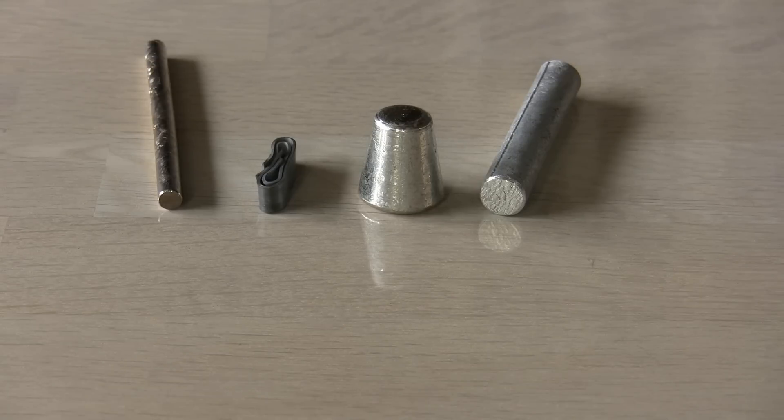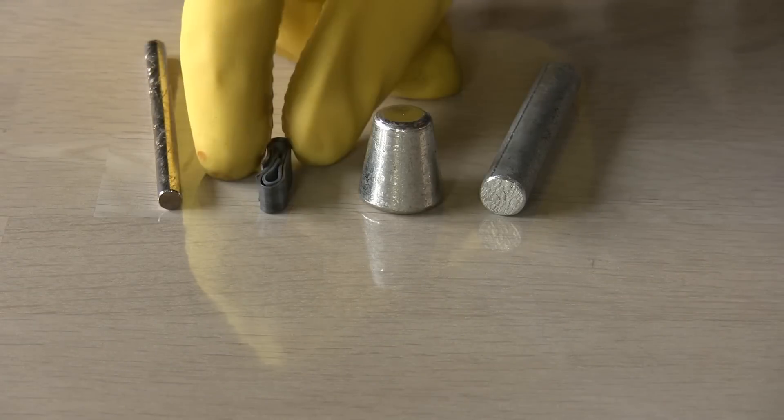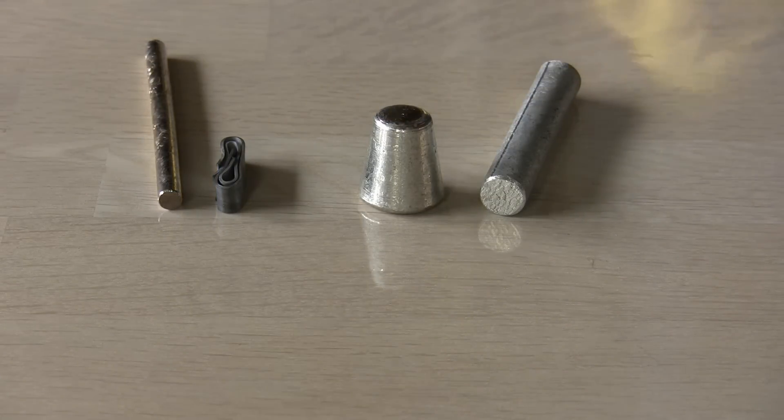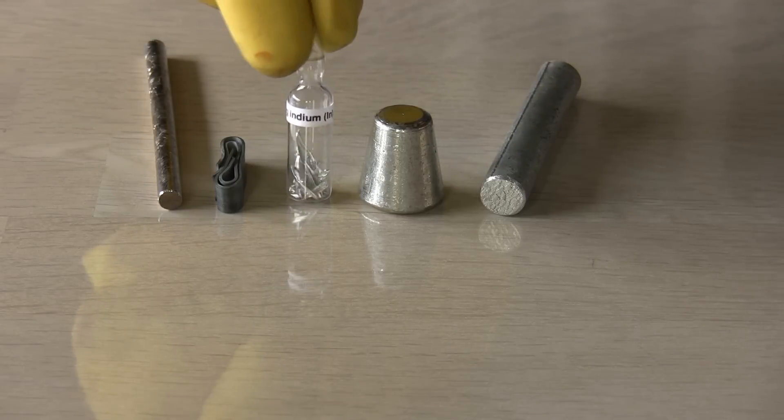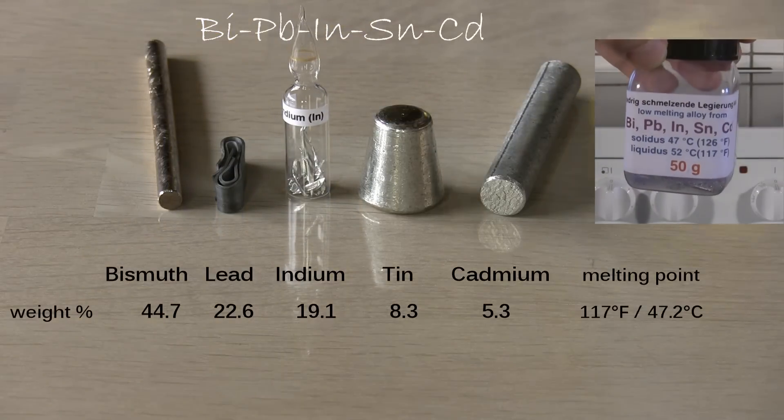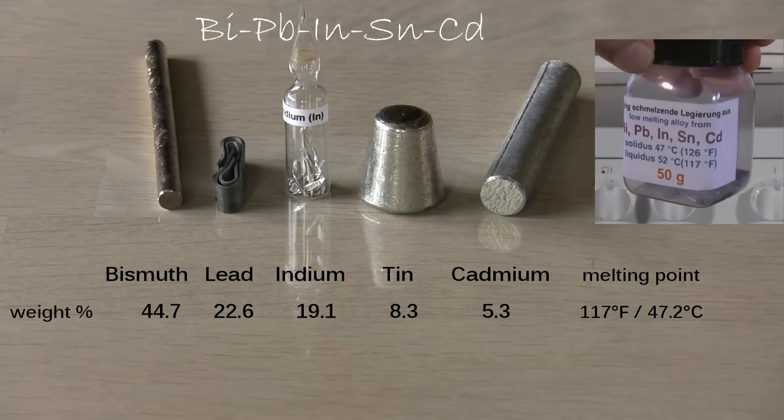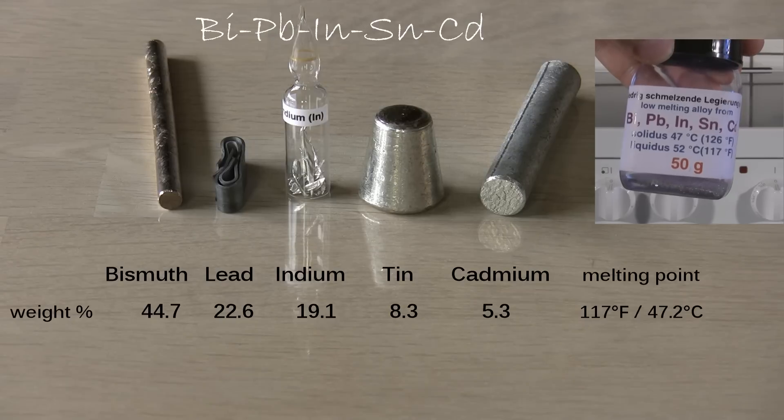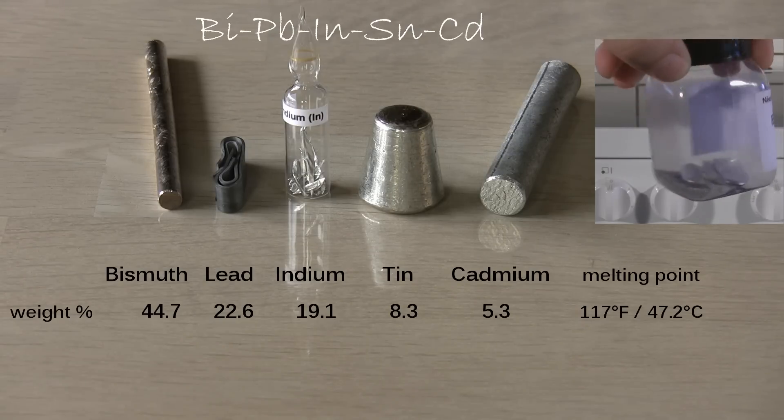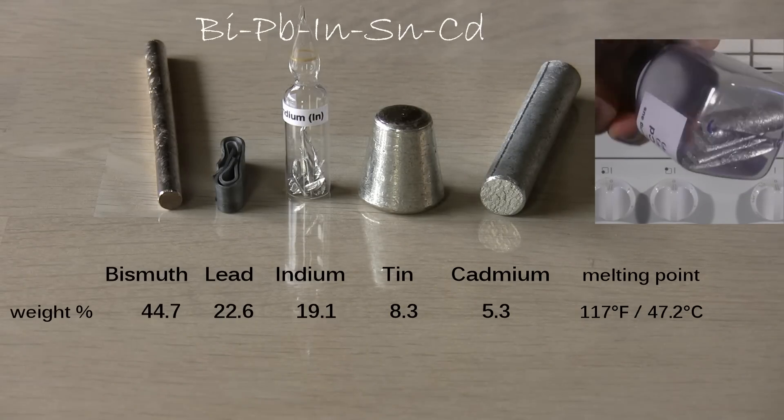The indium content of Field's metal seems to lower the melting point so what happens if we mix some indium with the elements in Wood's metal? Well we get an alloy with an even lower melting point that has been used in ceiling mounted fire sprinklers. The heat from a fire will melt this alloy and open a hole for the water to come out of.